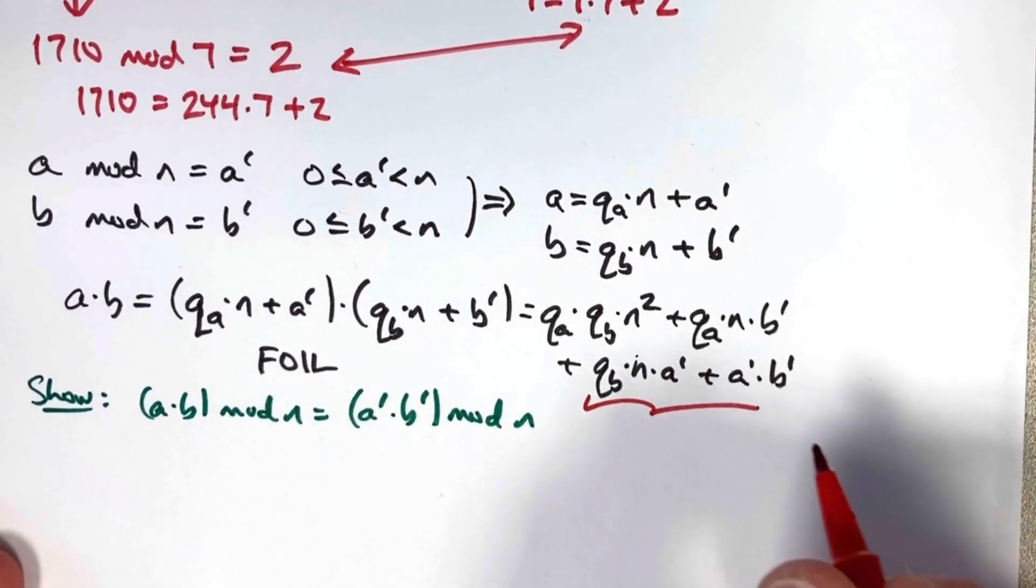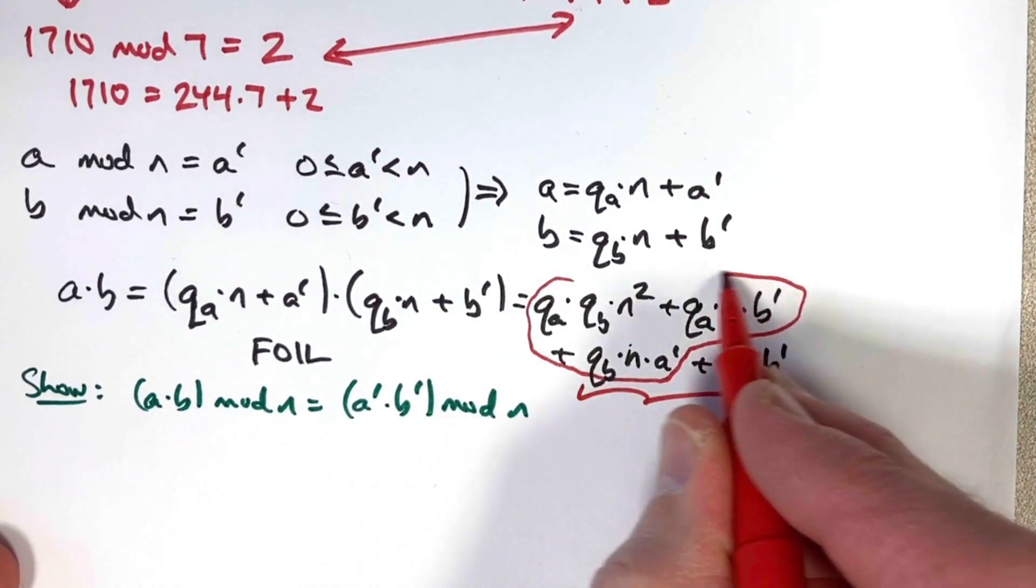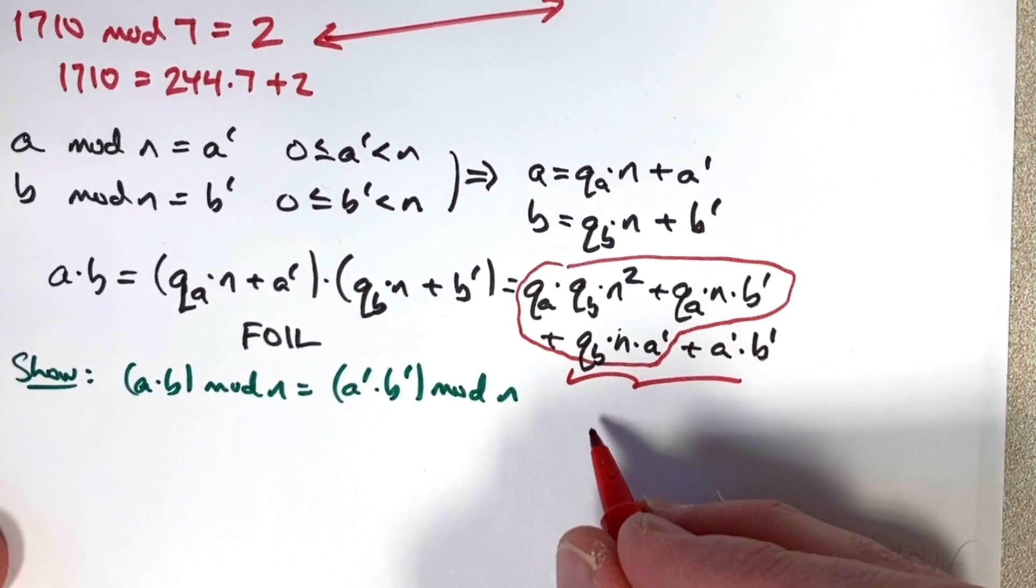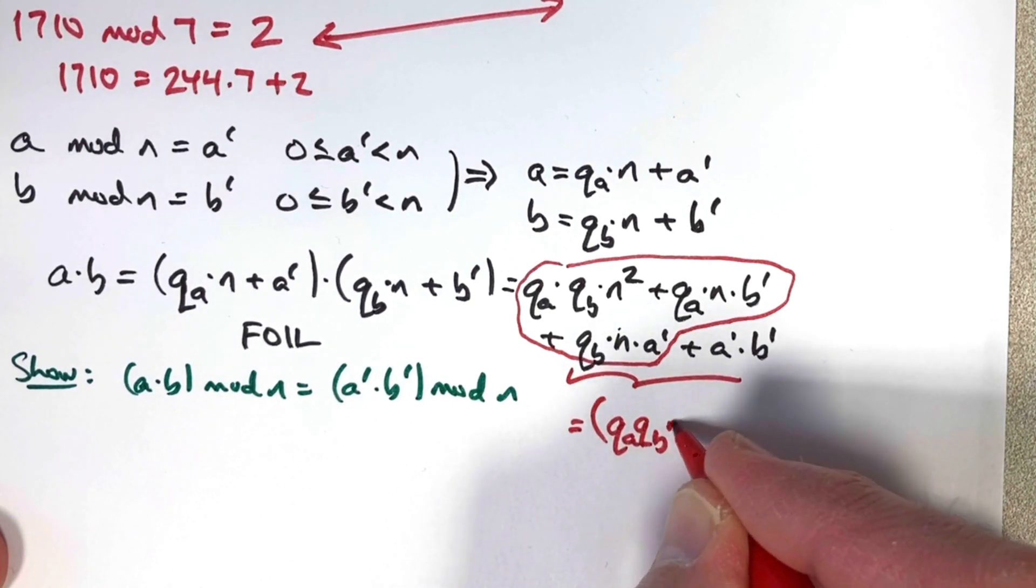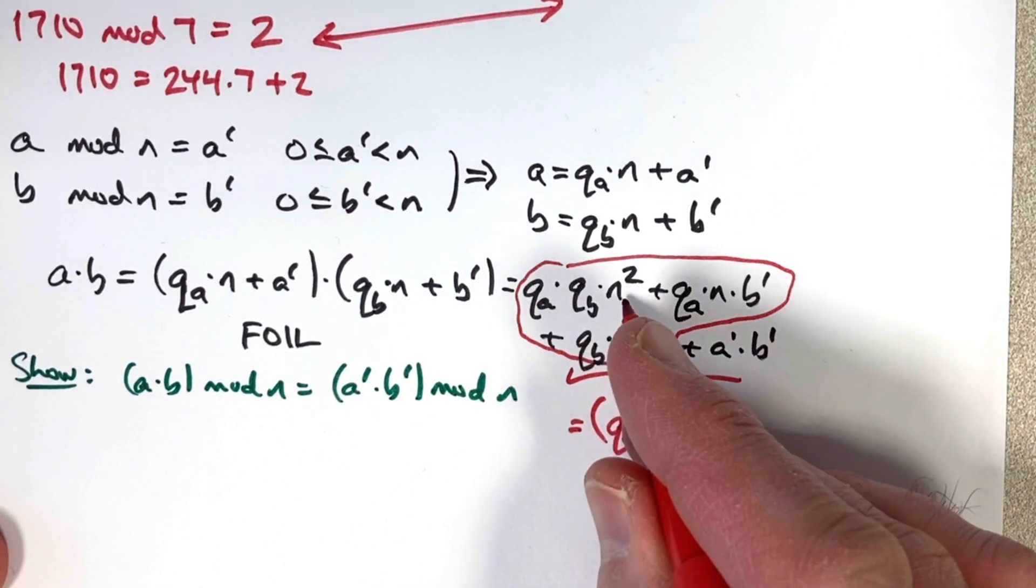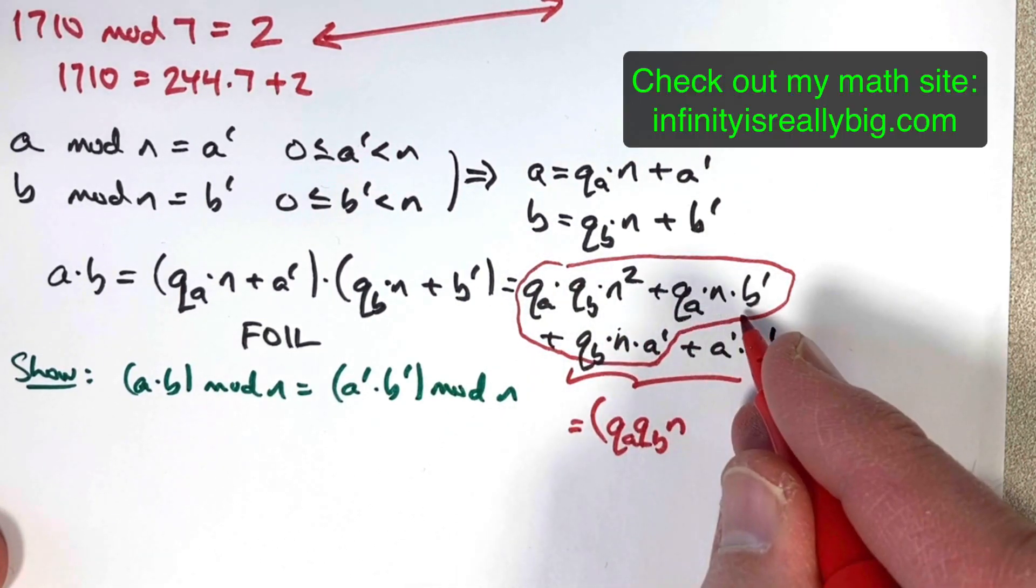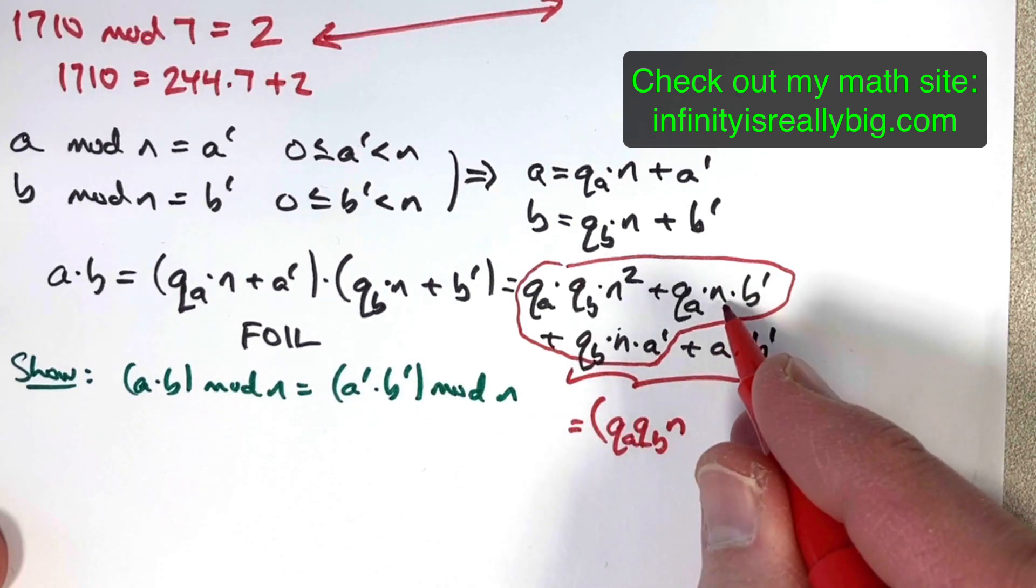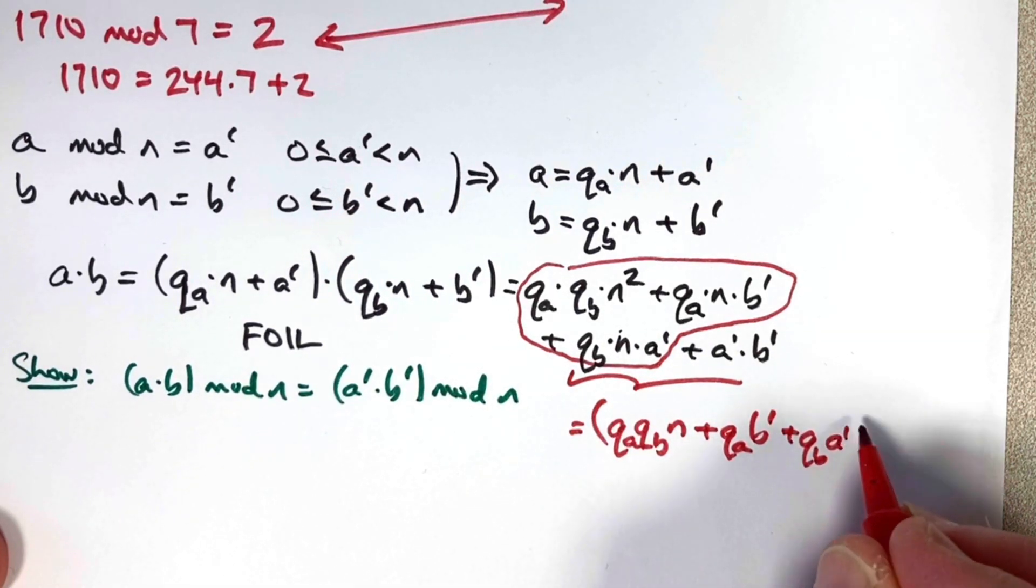What we want to do is we want to take this expression and all parts that involve n, we want to factor an n out. We can write that this expression ultimately equals q a times q b times one factor of n from this thing. I'm factoring out one factor of n leaving me with n to the first power. Then I take this thing and I take away the n because there's already an n to the first power. So I get q a times b prime.